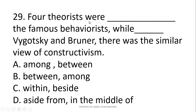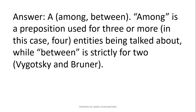Next: Four theorists were blank the famous behaviorists, while blank Vygotsky and Bruner there was the similar view of constructivism. We use 'among' when talking about more than two people in a group, and 'between' strictly for two. The correct answer: 'Four theorists were among the famous behaviorists, while between Vygotsky and Bruner there was the similar view of constructivism.'